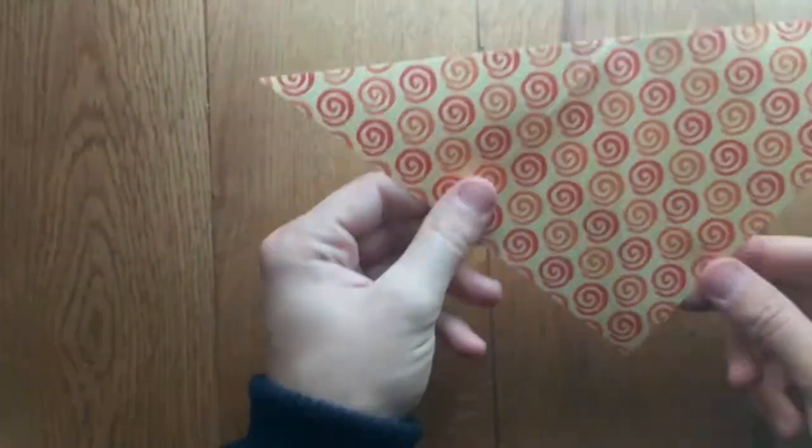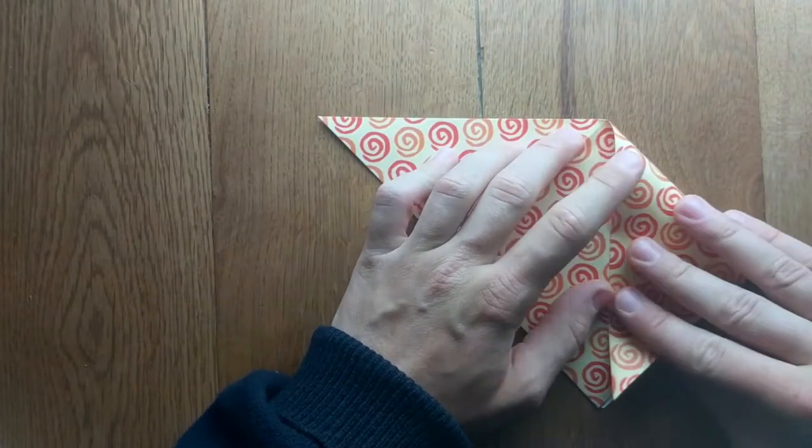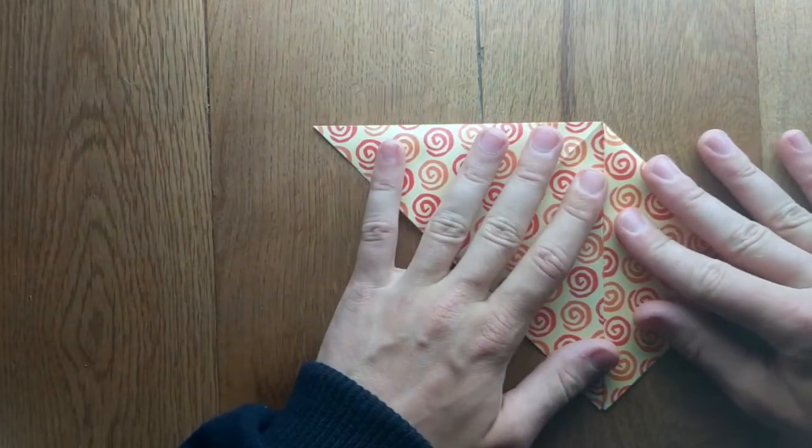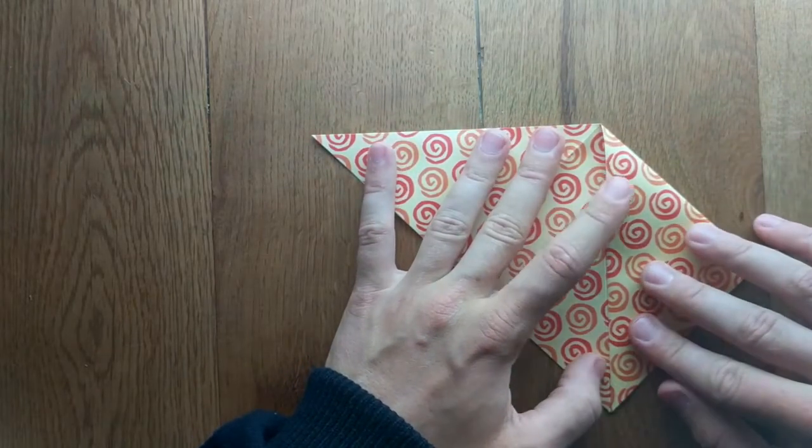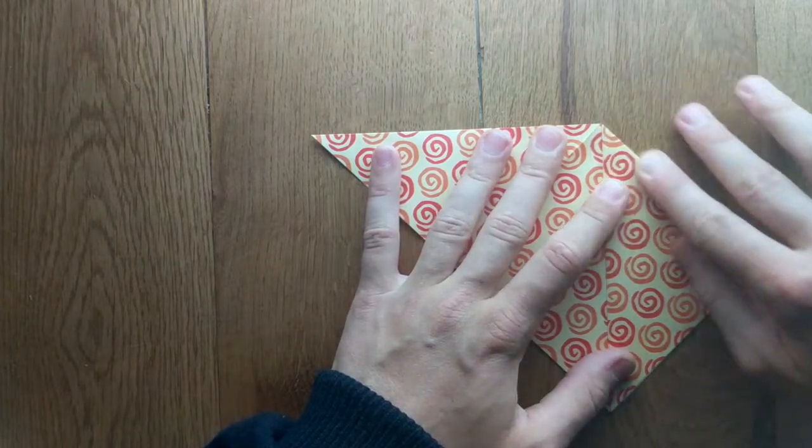Now you should have a triangle just like that. Then you're going to fold these two corners into the center line that you've done, so from here down to here, and that should make a diamond shape.